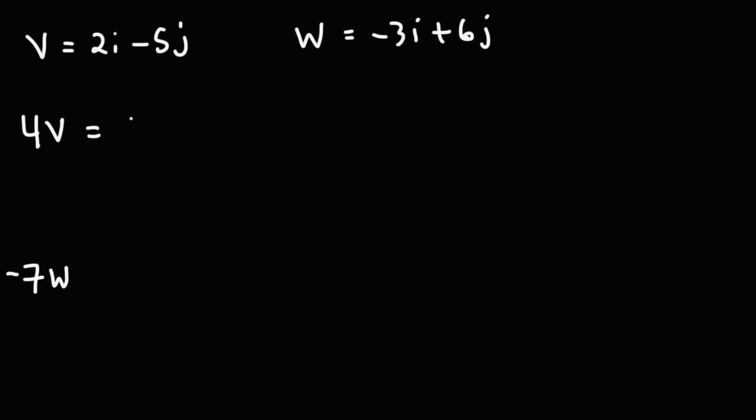So for this one, 4V is just going to be 4 times 2i minus 5j. So it's going to be 8i minus 20j. As you can see, this is not too difficult.